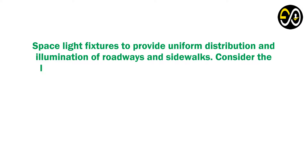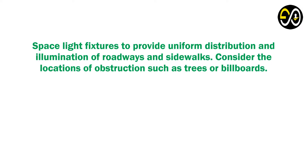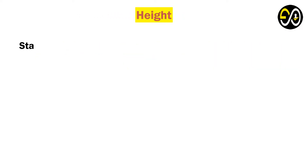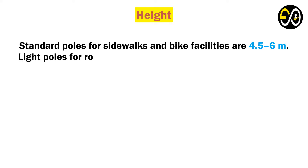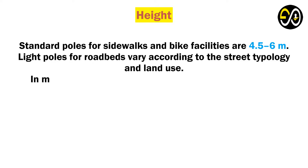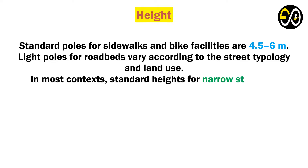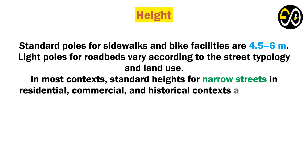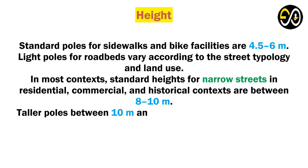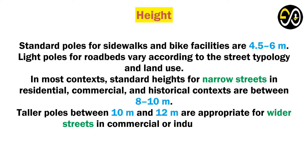Use fixtures to provide uniform distribution and illumination of roadways and sidewalks. Consider the locations of obstructions such as trees or billboards. Standard poles for sidewalks and bike facilities are 4.5 to 6 meters. Light poles for roadbeds vary according to the street typology and land use. In most contexts, standard heights for narrow streets in residential, commercial, and historical contexts are between 8 to 10 meters. Taller poles between 10 meters and 12 meters are appropriate for wider streets in commercial or industrial areas.